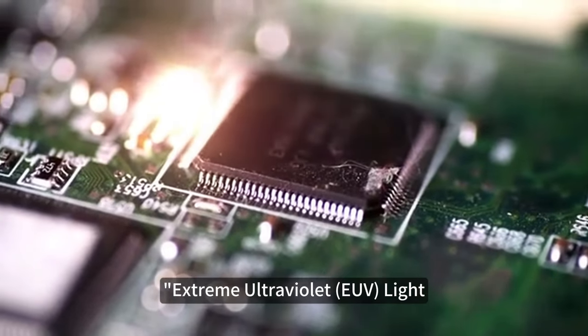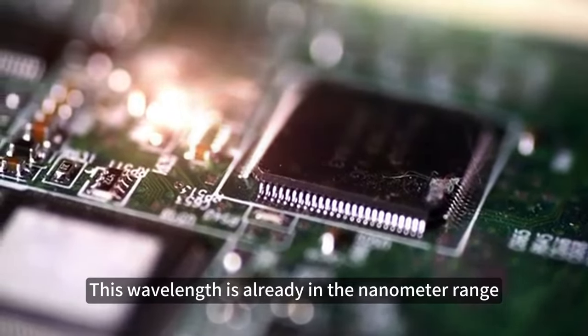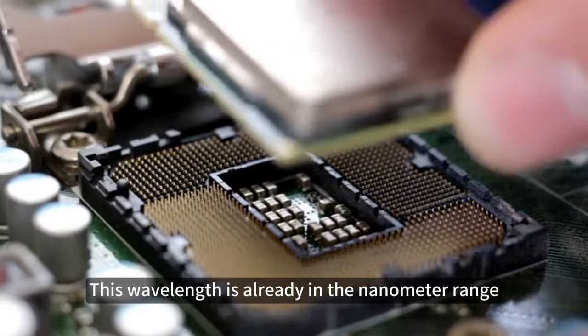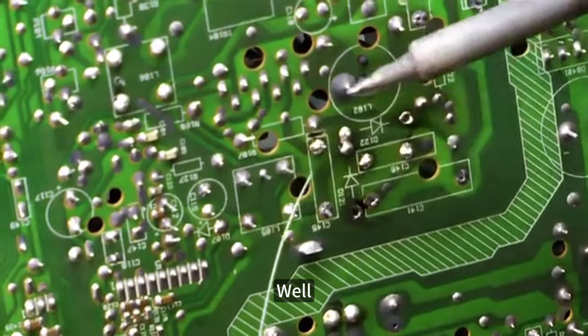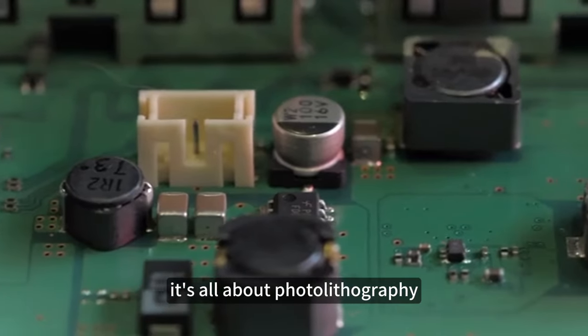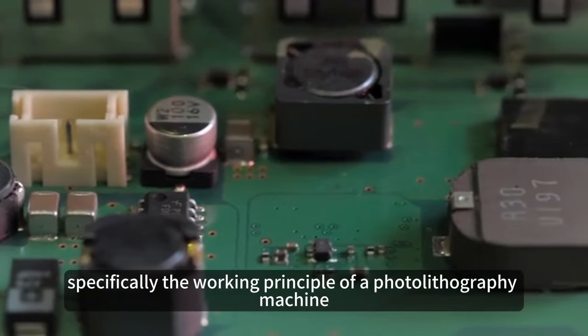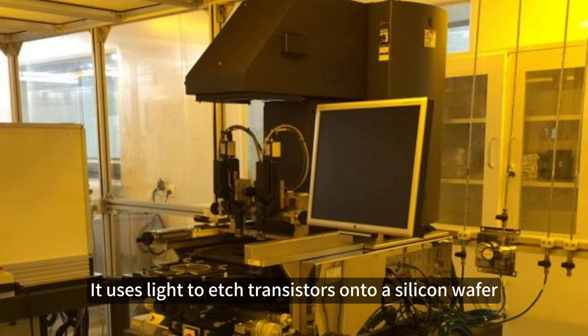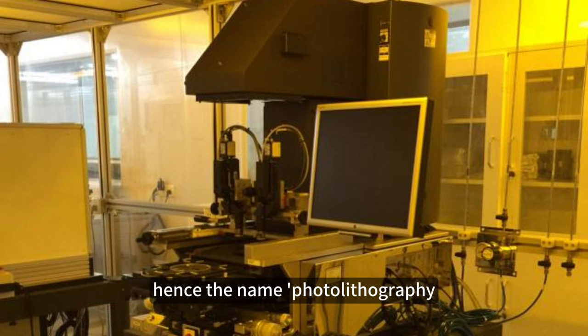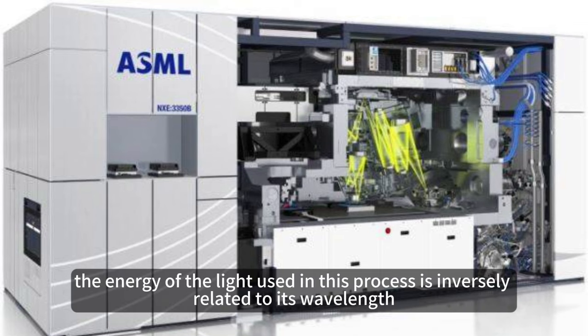Extreme ultraviolet EUV light—this wavelength is already in the nanometer range. So what exactly is going on here? Well, it's all about photolithography, specifically the working principle of a photolithography machine. It uses light to etch transistors onto a silicon wafer, hence the name photolithography.